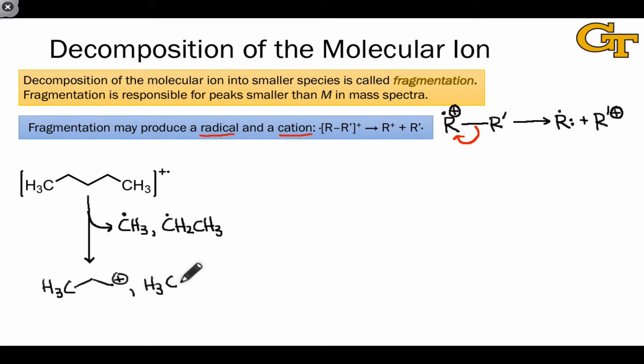We've actually seen an example of this in the last video. If you go back and revisit the last video, you'll notice that the M-29 molecular ion peak that we identified in the N-propanol mass spectrum corresponds to the loss of an ethyl radical, which has a mass of 29 grams per mole.